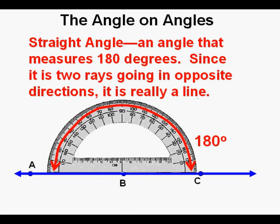A straight angle is really a line. You continue the rotation, and those two rays go in opposite directions. It measures 180 degrees, and since it is two rays going in opposite directions, it really is a line.